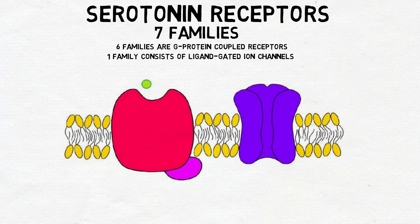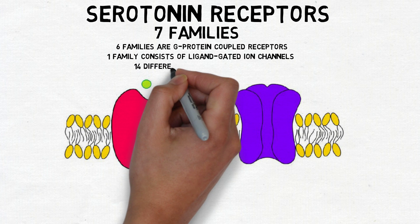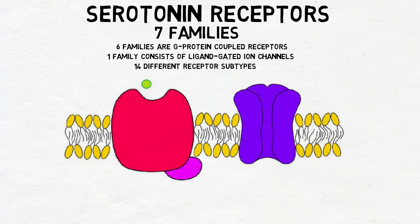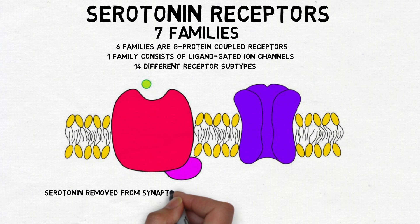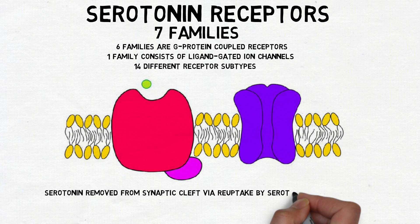Within these seven families of receptors, 14 receptor subtypes have been identified as well. Serotonin is removed from the synaptic cleft by a transport protein called the serotonin transporter, or SERT.